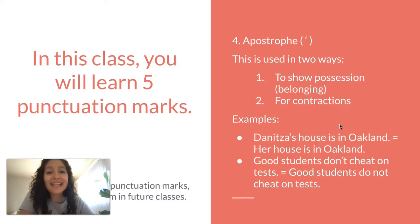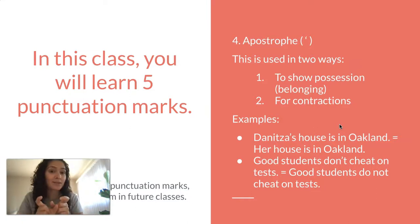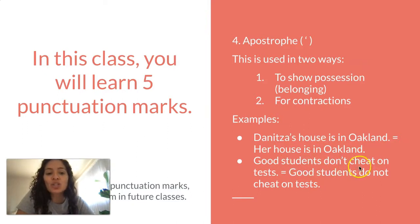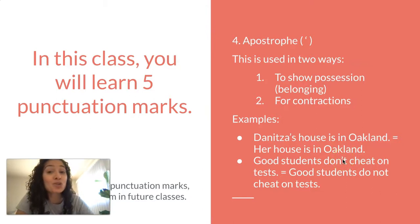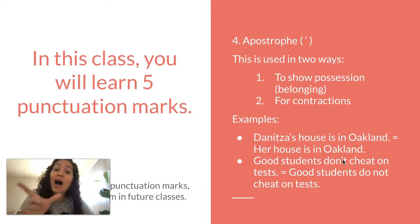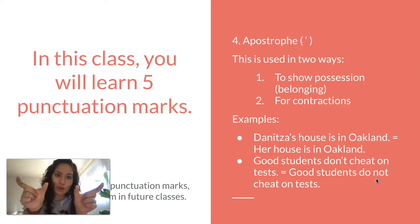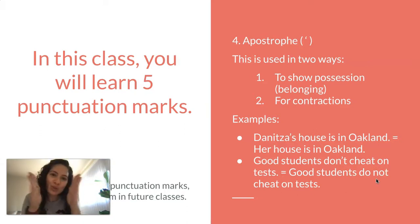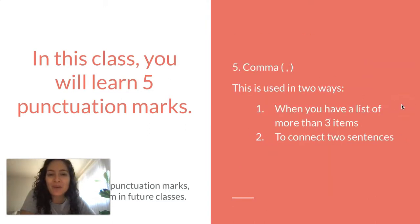The second way we use apostrophes is to make a contraction — to take a long word or two words and make them shorter. For example, "Good students don't cheat on tests." Here "don't" uses an apostrophe because it's the short version of "do not." We take those two words, squeeze them together with the apostrophe, and get "don't."